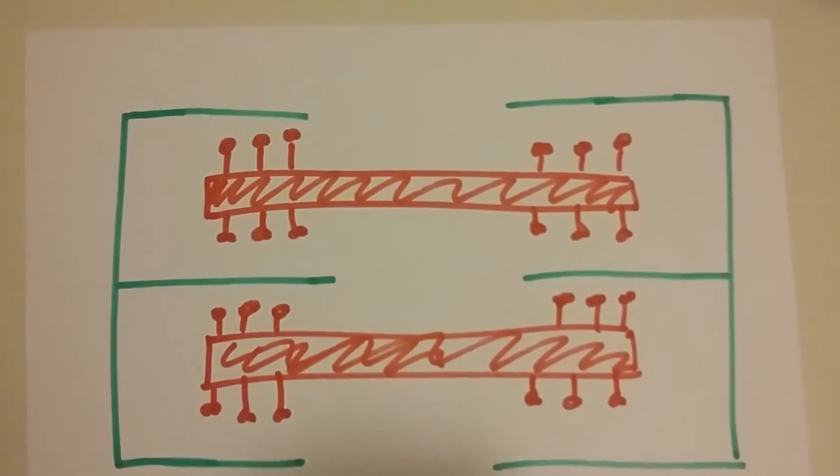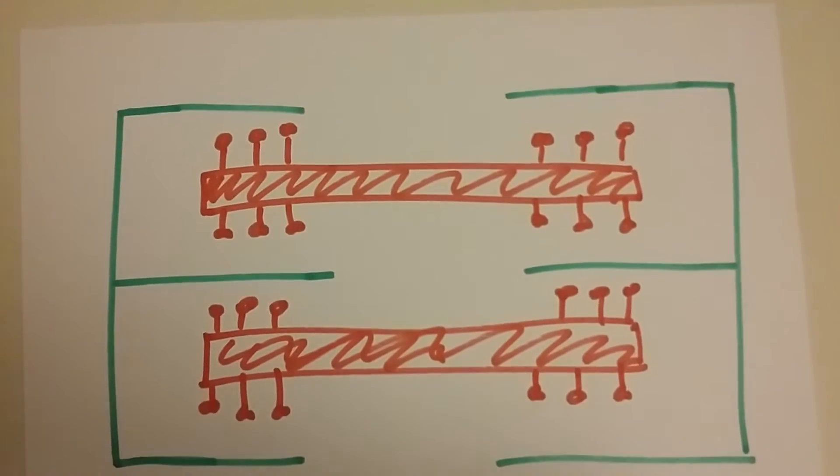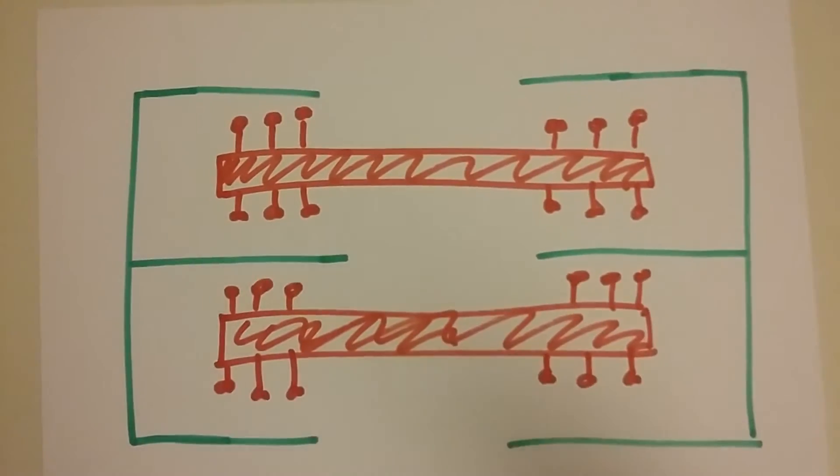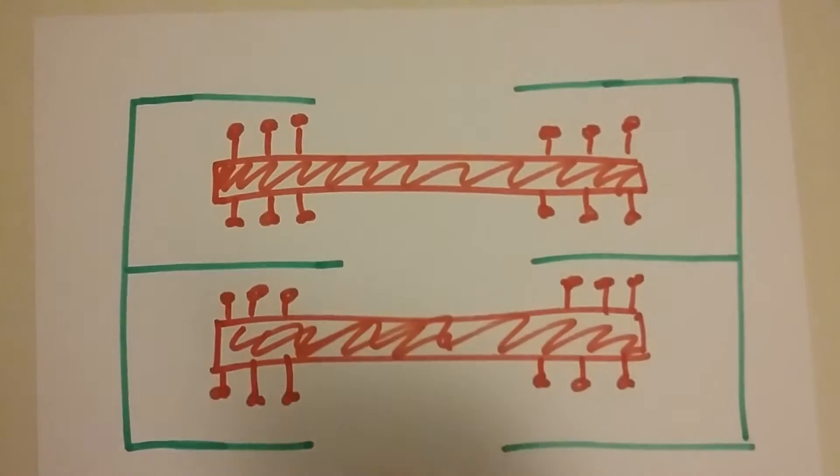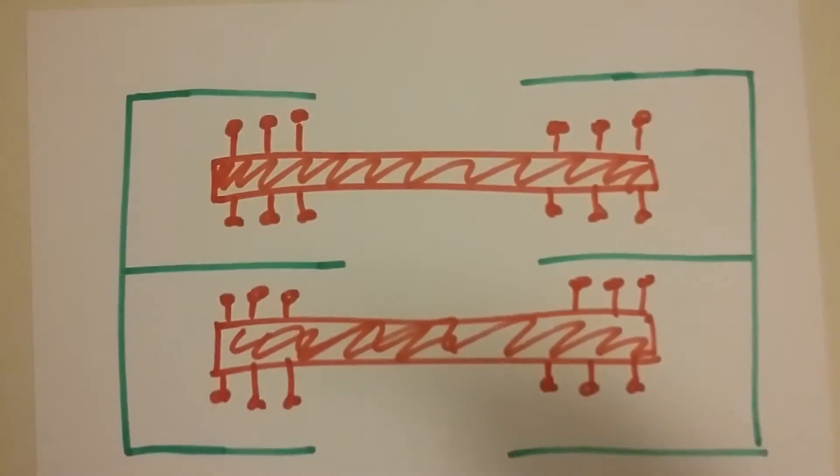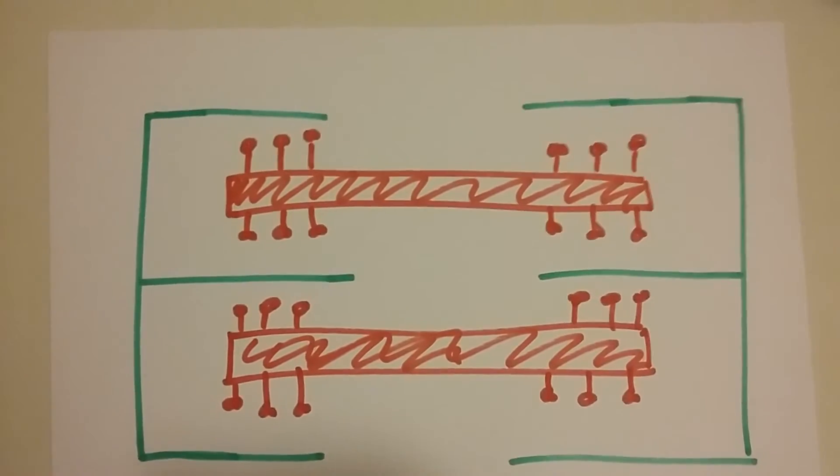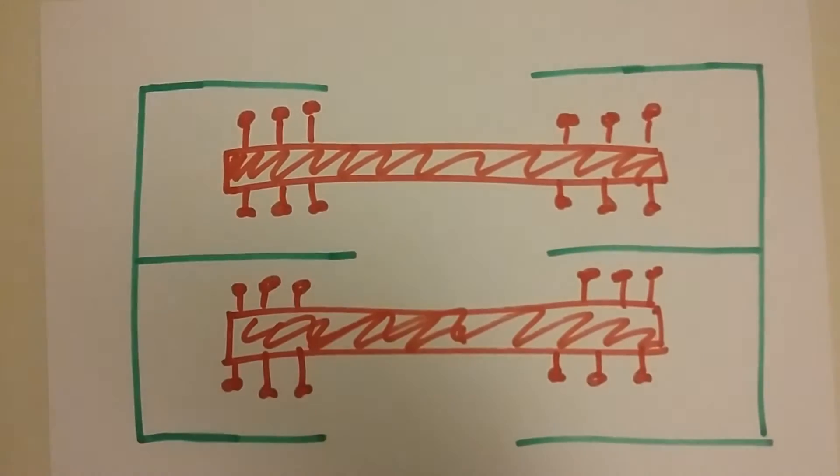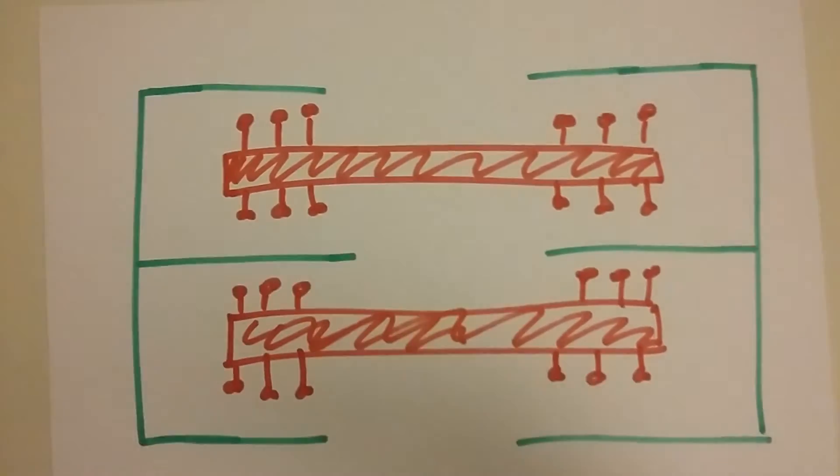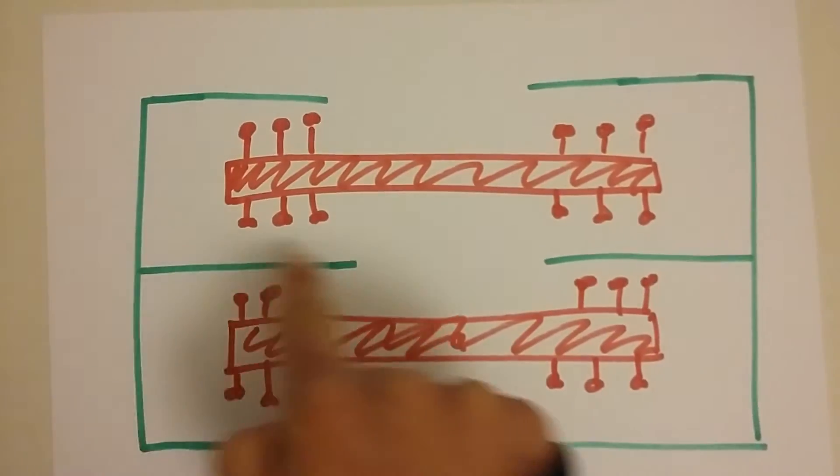Just to give you a bit of orientation, this green line here is the actin. The way I remember this: actin has got a 'T' in it, therefore it's the thin line. So actin is the thin line.